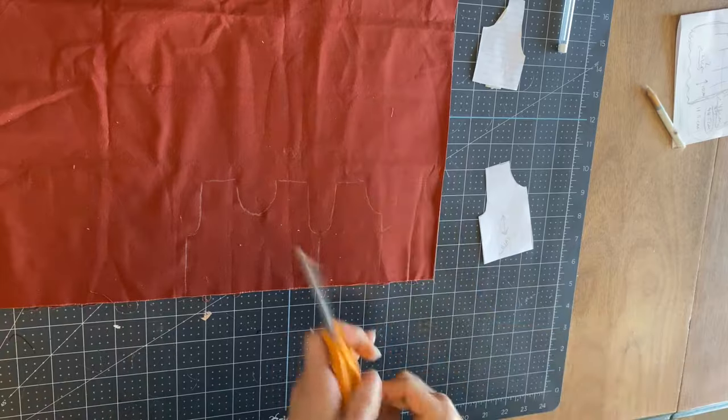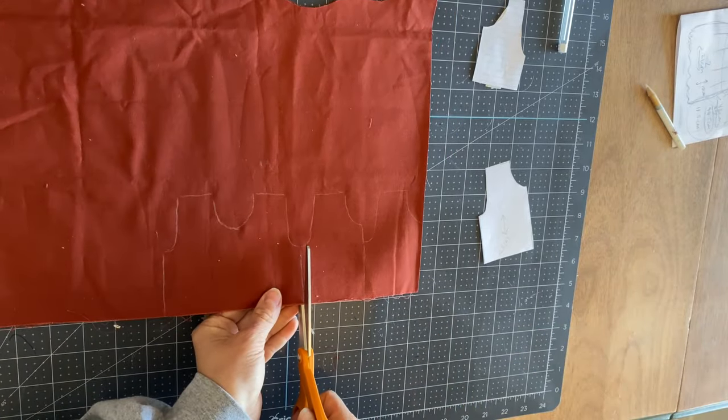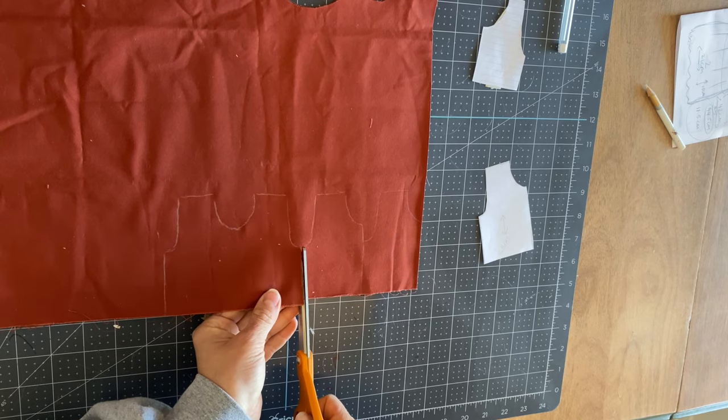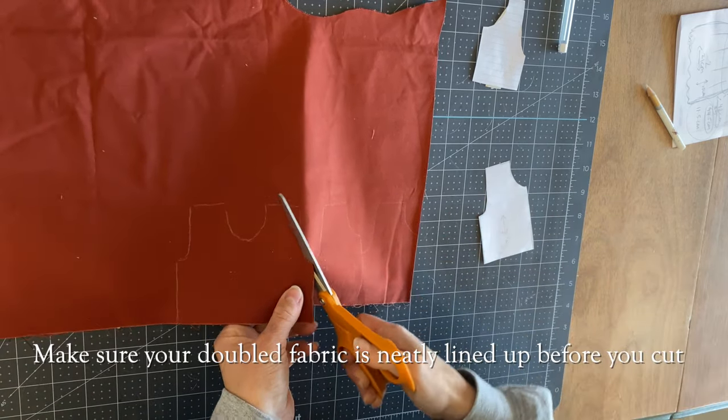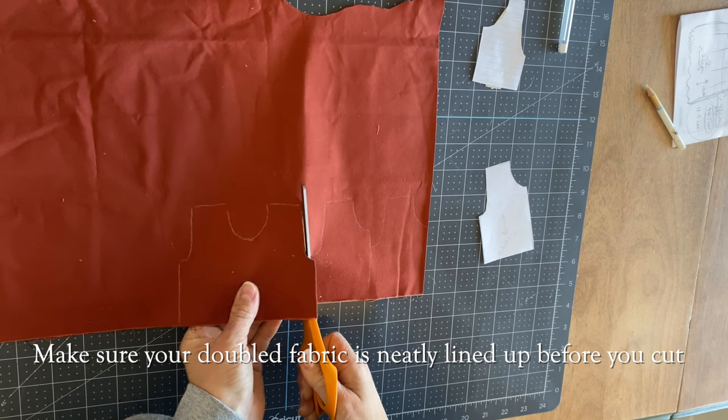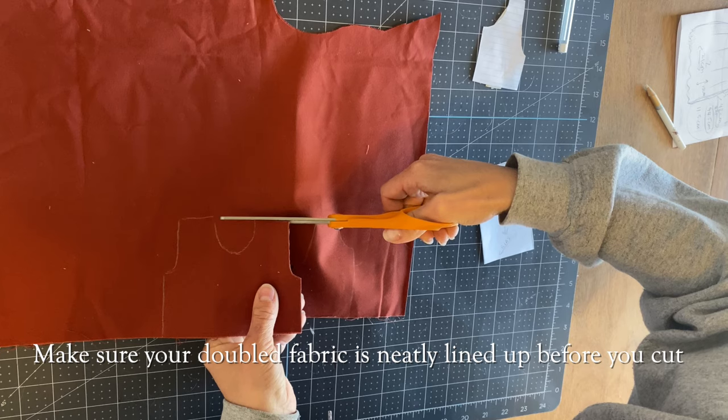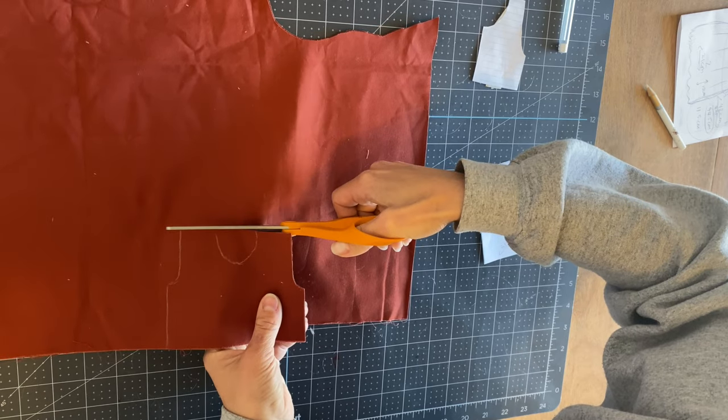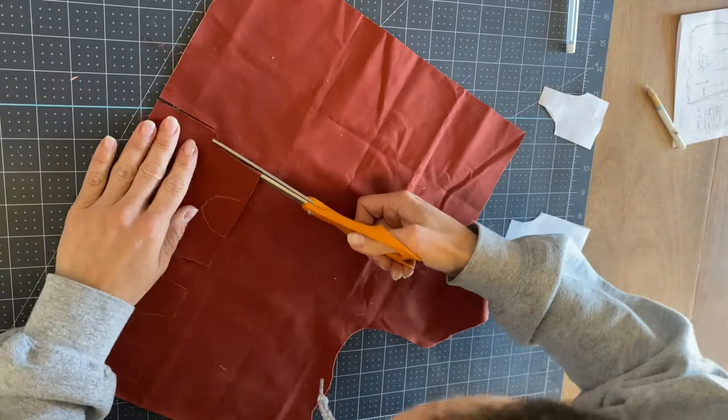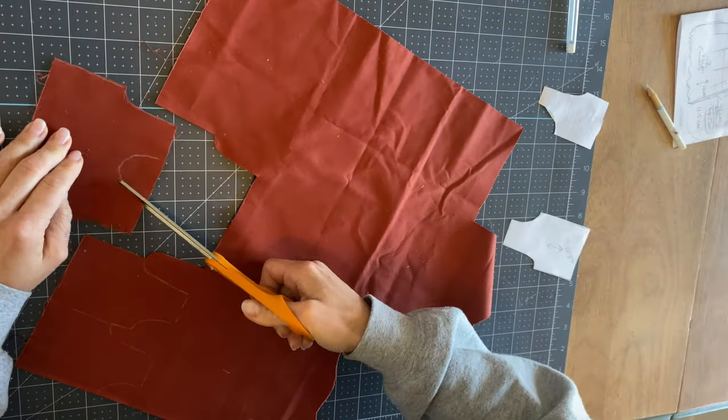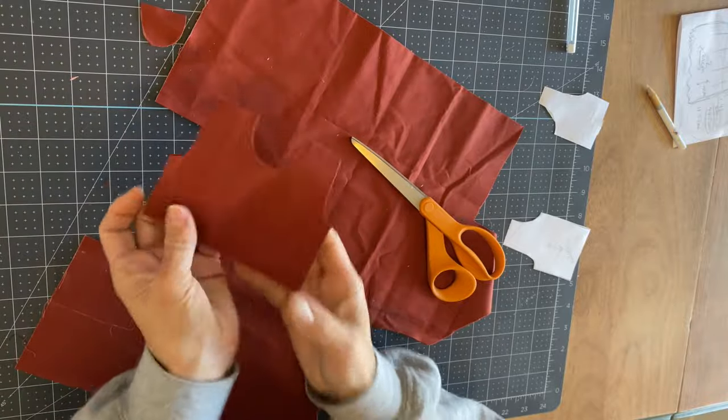When I cut it out, I'm gonna have the perfect pieces for my bodice. Get my fabric scissors or you could use a rotary cutter and cut. I'm cutting right on the line because again, this is a pattern that includes the seam allowances, so I don't have to worry about that. Okay, so now I have the front bodice piece.